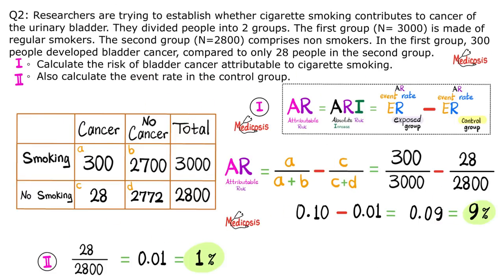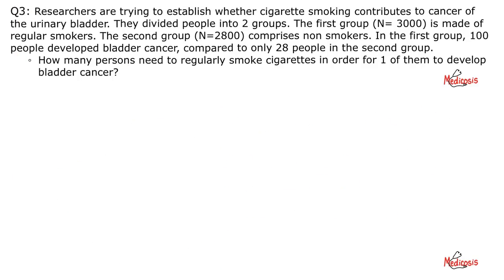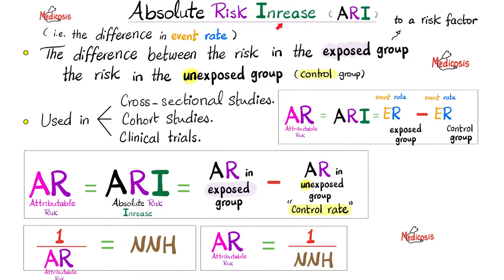Here are the same answers in color. Pause and review — without a table and with a table. This one is your homework: how many persons need to regularly smoke cigarettes in order for one of them to develop bladder cancer? I used the same numbers as the previous problem. Let me know your answer in the comments. You will find the answer key in the next video, which will be titled Number Needed to Harm. Here is absolute risk increase again, otherwise known as attributable risk. Pause and review.